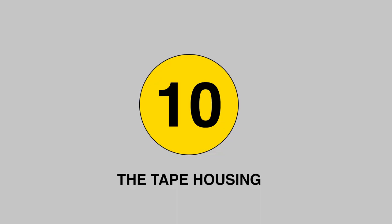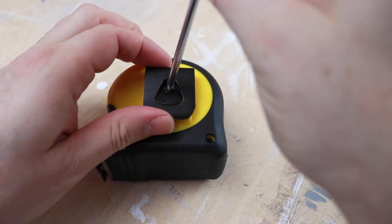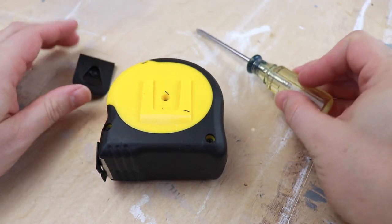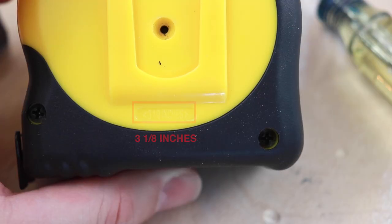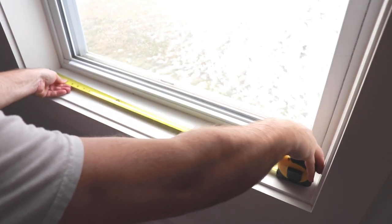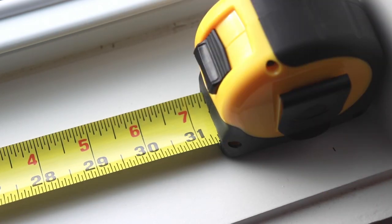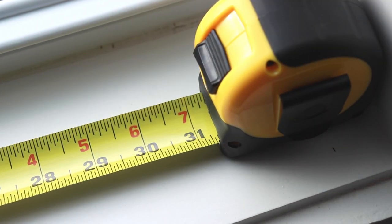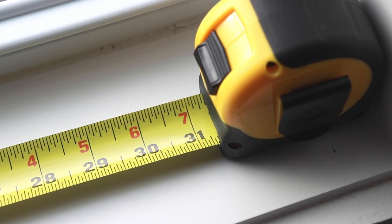Number 10: The tape housing. Very few people realize that your tape measure housing has a width printed on the back and there's a reason for that. This is very helpful when measuring the inside of a window or an area where you may be confined. All you need to do is add the width to the number of the measurement and you have an accurate measurement with half the hassle.